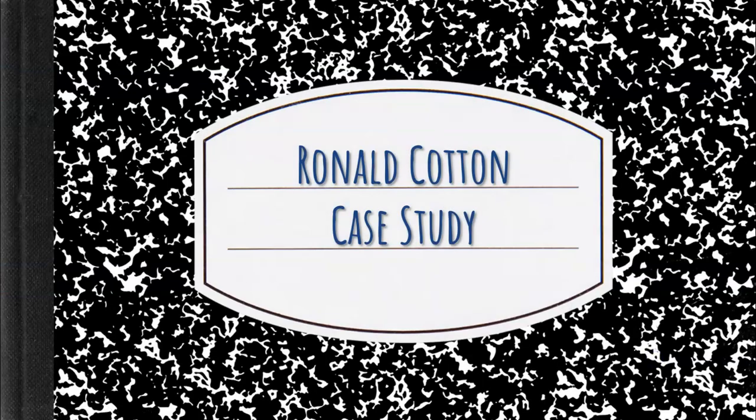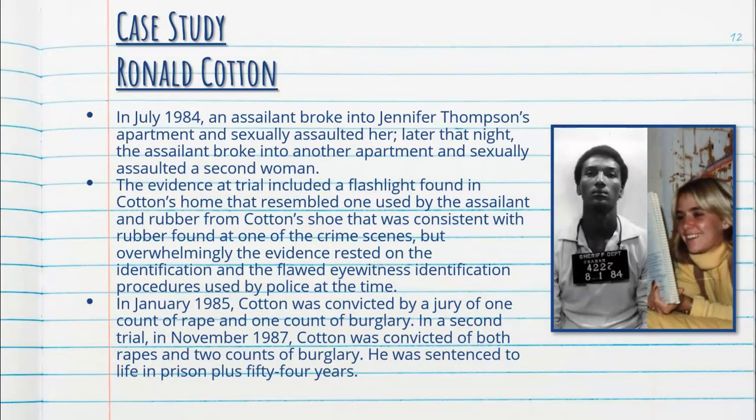Let's look at the Ronald Cotton case study — one of the most famous cases of reconstructive memory gone wrong, leading to a wrongful conviction. In 1984, an assailant broke into Jennifer Thompson's apartment and sexually assaulted her, and later that night broke into another woman's apartment and sexually assaulted a second woman. Evidence at trial included a flashlight found in Cotton's home and rubber from his shoe consistent with rubber at a crime scene, but overwhelmingly the evidence rested on flawed witness identification procedures. In 1985, Cotton was convicted of one count of rape and one count of burglary, and in a second trial in 1987 was convicted of both rapes and two counts of burglary, sentenced to life in prison plus 54 years.